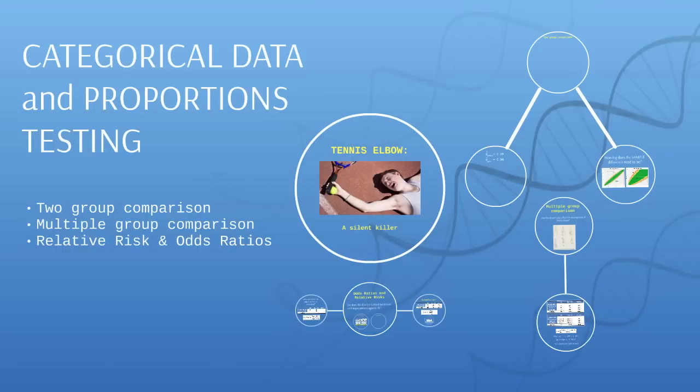Hi, it's Justin Zeltzer here on zedstatistics.com, or perhaps you're watching my YouTube channel zedstatistics. This is a presentation today on categorical data and proportions testing, which is an extremely important part of statistics because there's only really two different types of data: numerical and categorical.